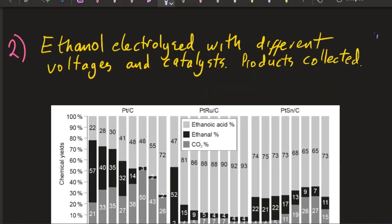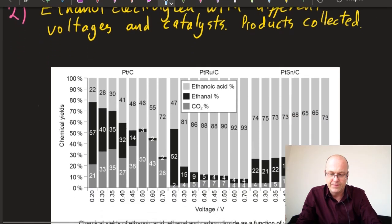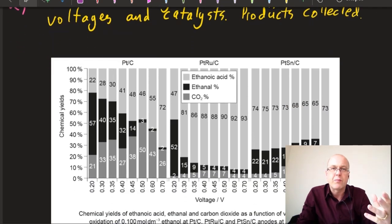That's question one. Question two: ethanol was electrolyzed at different voltages and we got this data here. Electrolyzed is passing electricity through something and it changes, as opposed to a conductor where you pass electricity through and there is no change. That came up years ago, not for a while. There's three different catalysts.